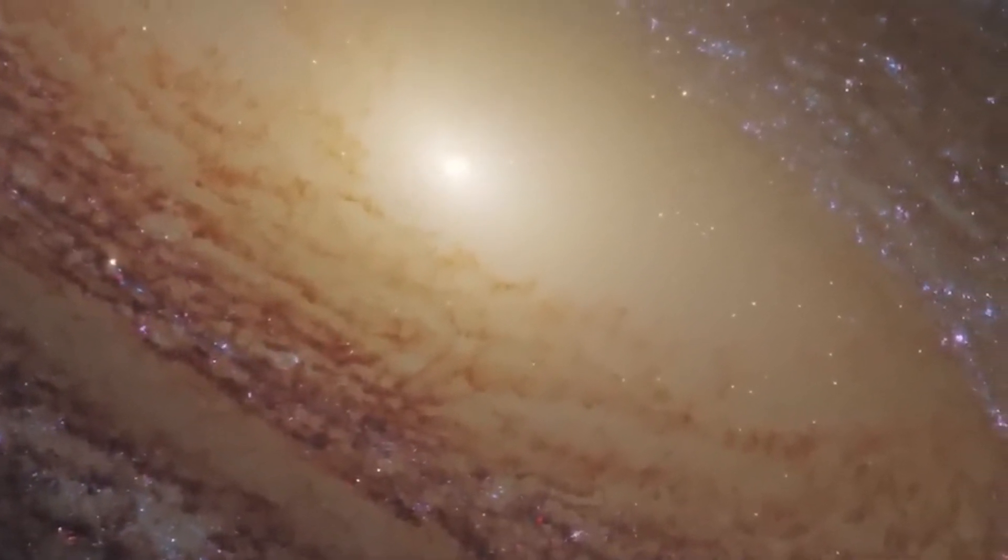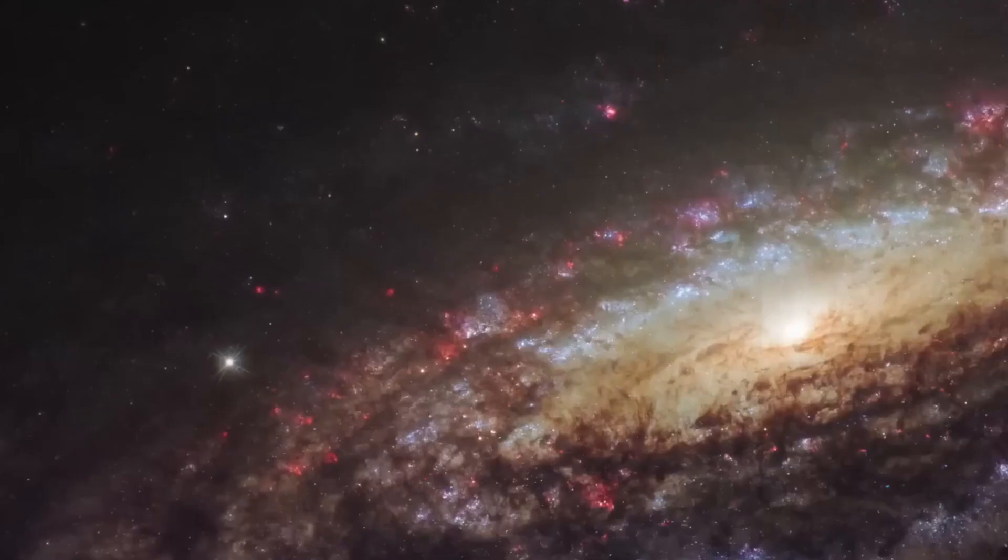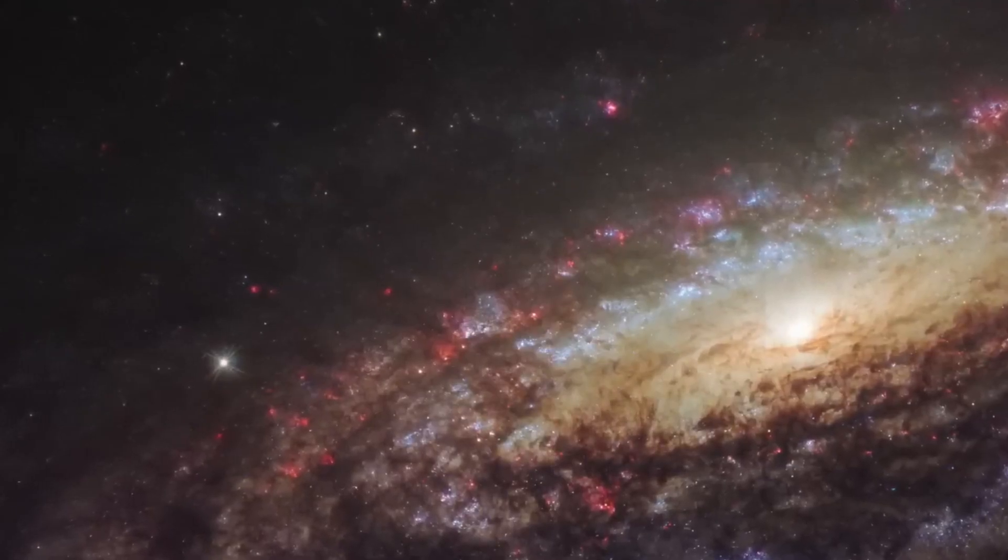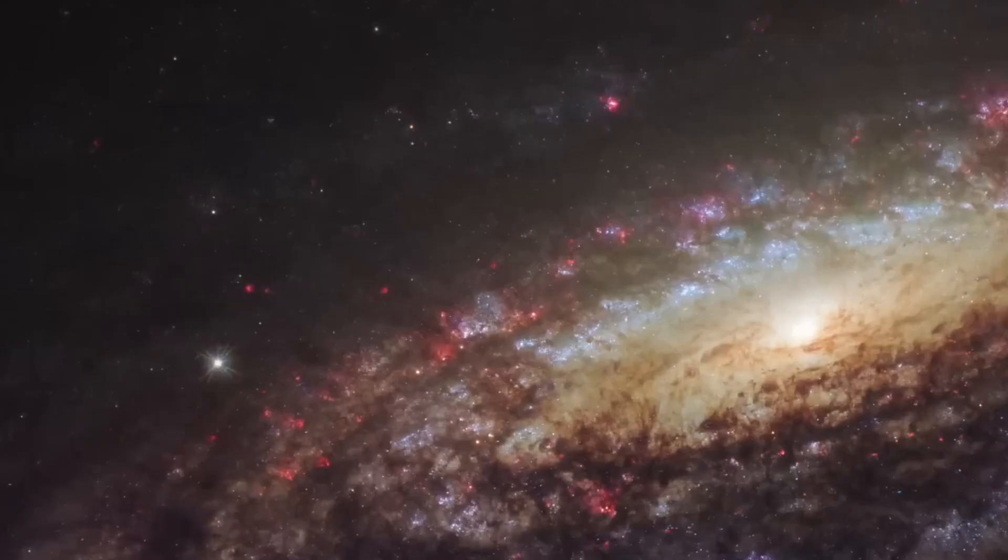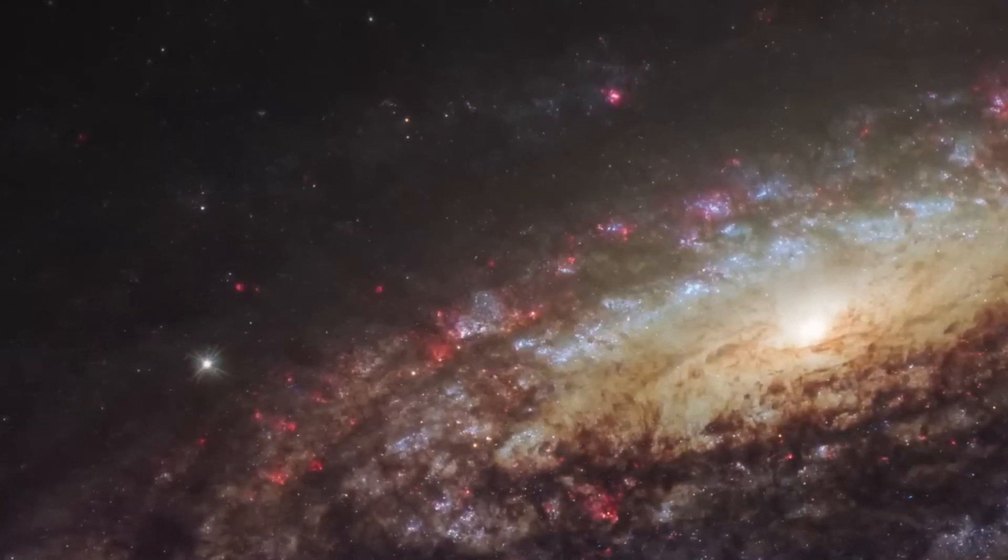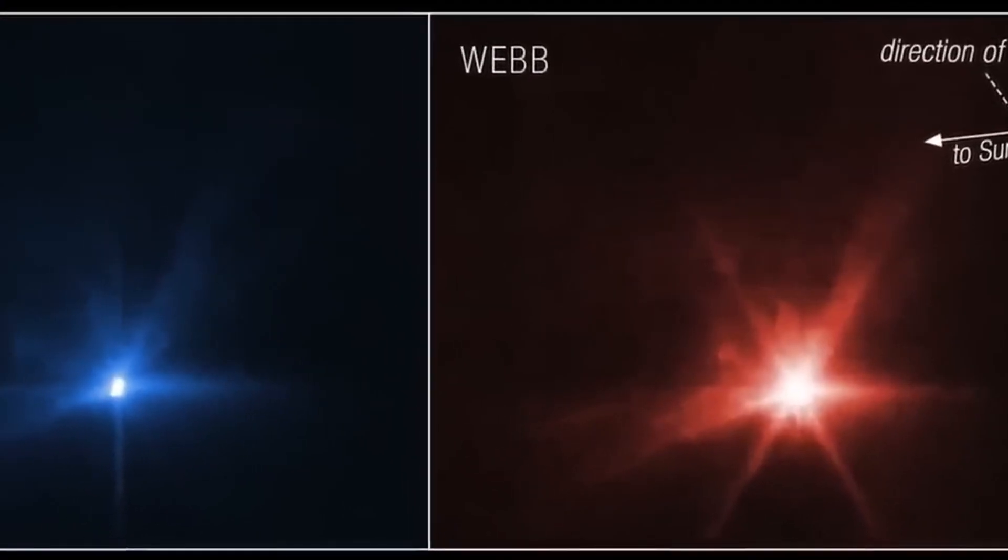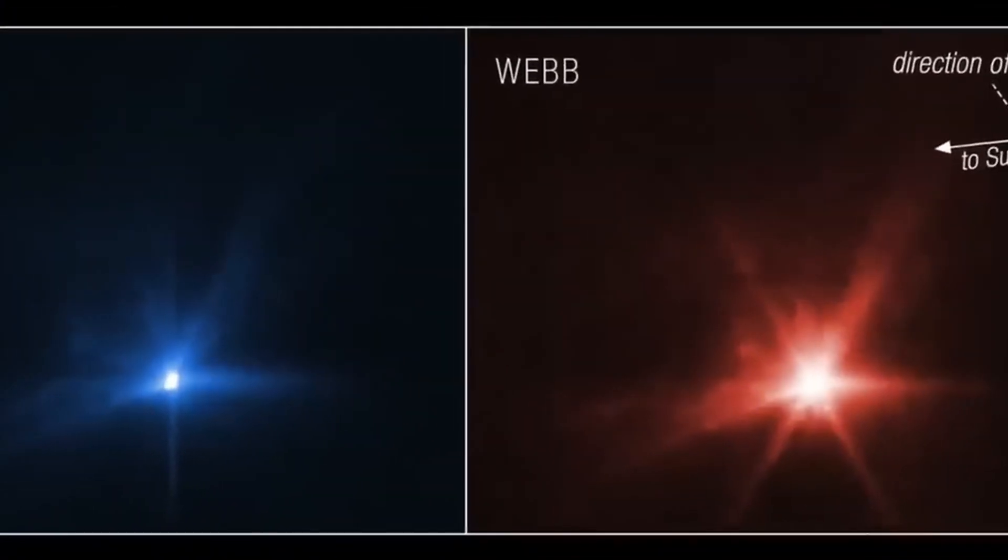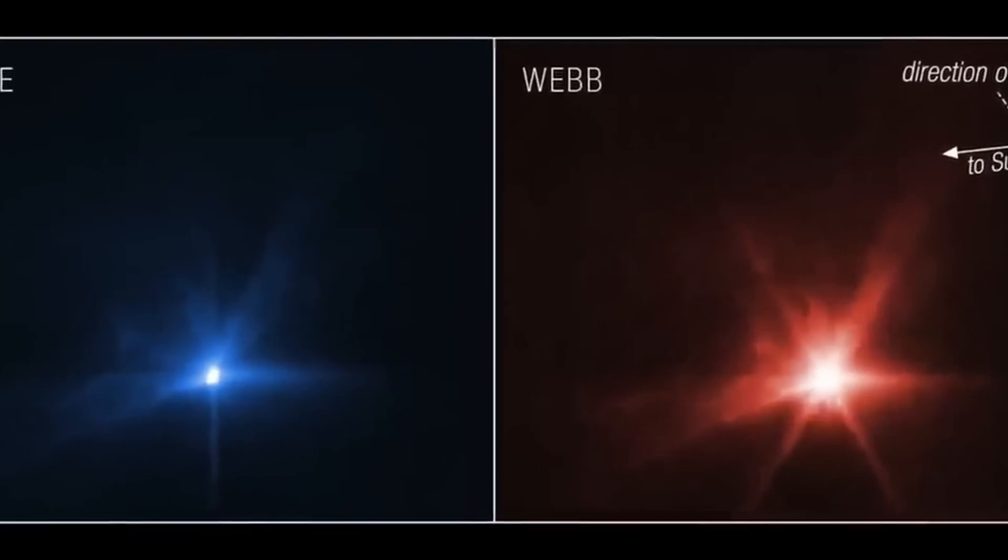This area of space is particularly interesting for astronomers as the galaxy's gravitational pull distorts the light of more distant galaxies behind them, a phenomenon known as gravitational lensing. Thanks to gravitational lensing, Webb is actually able to look much farther away. This is why some of the light from those distant objects seems curved and warped.